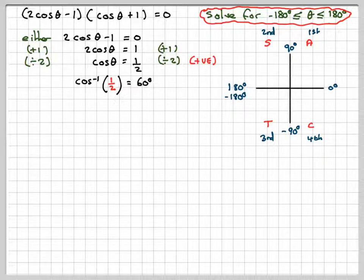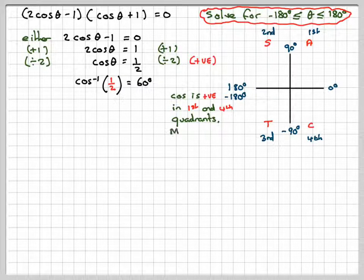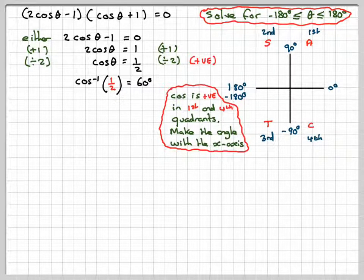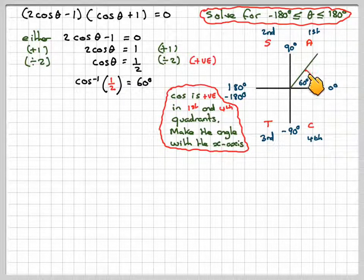We want to know where cos is positive. It's positive in the first and fourth quadrants, and remember that we make up the angle with the x-axis. So we go to the first, we draw an angle of 60 degrees with the x-axis, and we go to the fourth and we draw an angle with the x-axis 60 degrees.